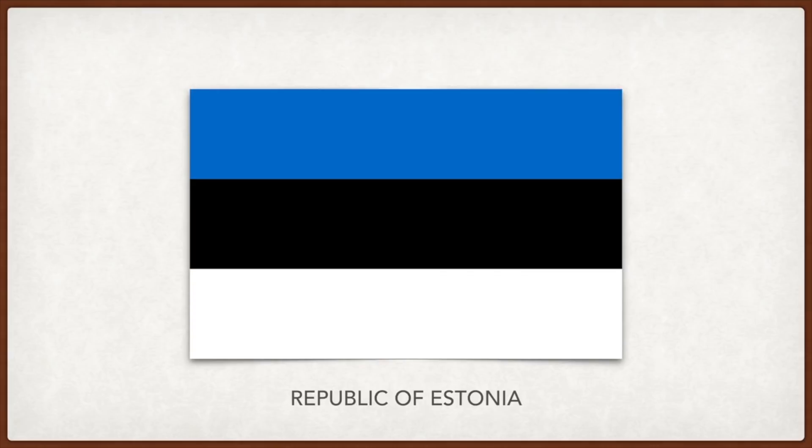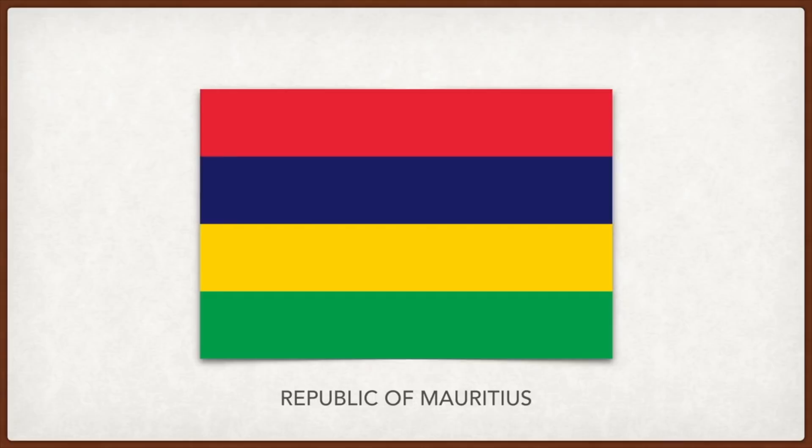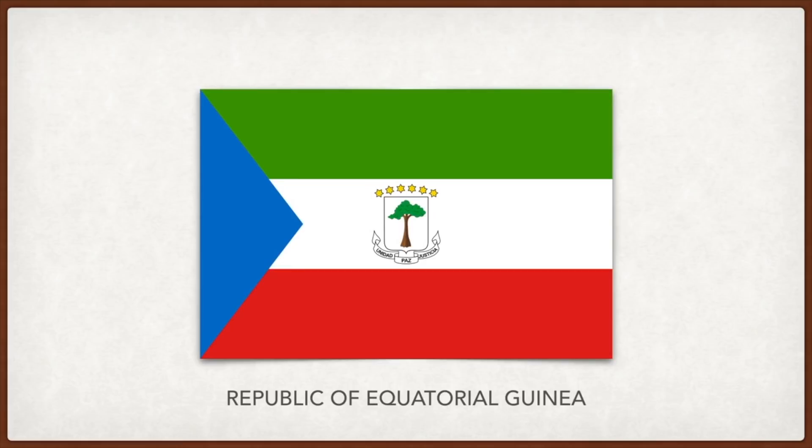Mauritius: red is for the struggle for independence, blue is for the island's nature within the Indian Ocean, yellow is for the light to freedom, and green is for the lush vegetation all year long. Equatorial Guinea: in the center of the coat of arms is a silk cotton tree under which the first treaty was signed between Spain and a local ruler; below it the country's motto in Spanish — 'Unity, Peace, and Justice.'